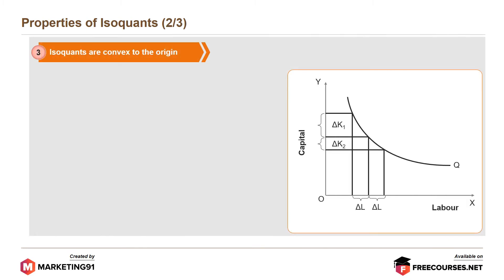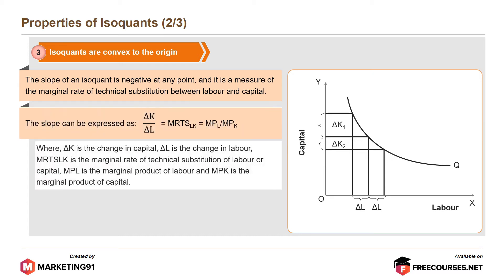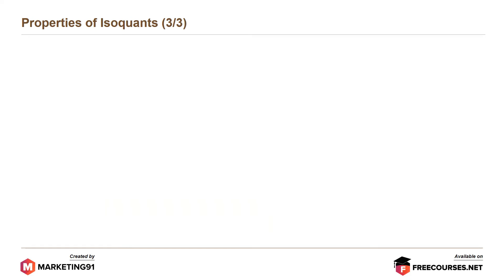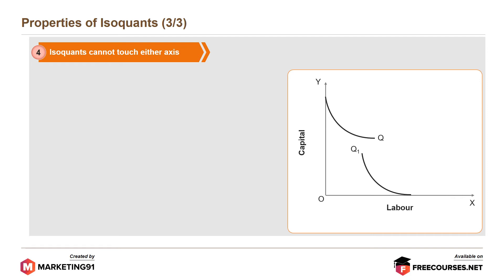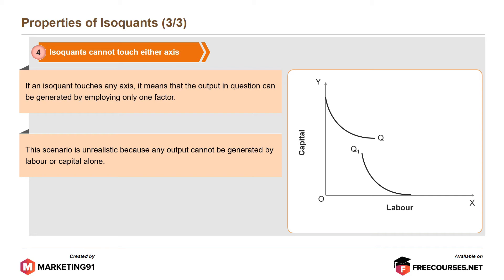Third property: isoquants are convex to the origin. The slope of an isoquant is negative at any point and it is a measure of the marginal rate of technical substitution between labour and capital. The slope can be expressed as change in capital divided by change in labour, which equals the marginal rate of technical substitution of labour for capital, where MPL is the marginal product of labour and MPK is the marginal product of capital. The convexity implies that as we move down a curve, a lower amount of capital is spent per additional unit of labour to maintain a constant output level. Fourth, isoquants cannot touch either axis, because if they did, it would mean output can be generated by only one factor, which is unrealistic.